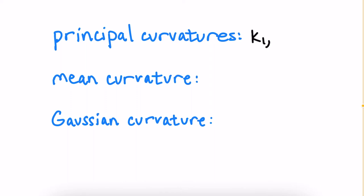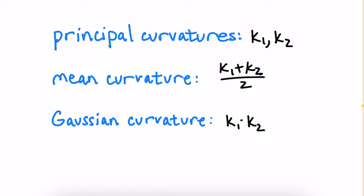If we denote the principal curvatures at a point as k1 and k2, then the mean curvature is equal to k1 plus k2 over 2, and the Gaussian curvature is equal to the product of k1 and k2. So, for example, if we're standing on a flat desk, all of the normal curvatures are 0, so the Gaussian curvature is 0.